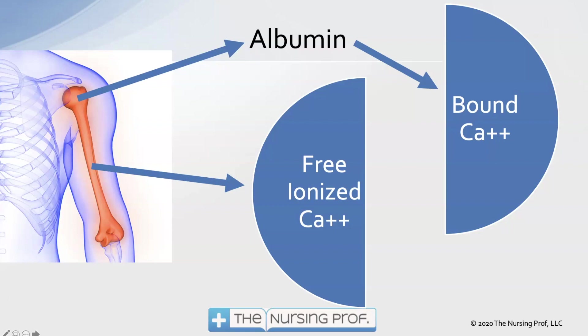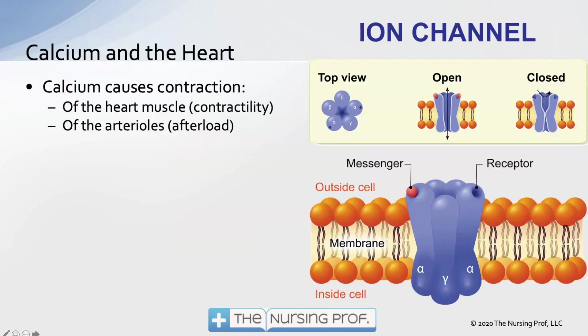We have calcium that is bound to albumin — the vast majority of our circulating calcium in the blood is this type. The other type is called free or ionized calcium. The free ionized calcium is the electrolyte that's actually doing all the work. However, we can pull some calcium from albumin if necessary to increase our calcium level in the blood.